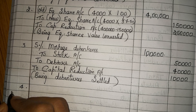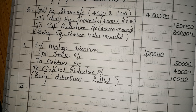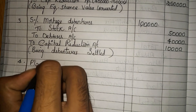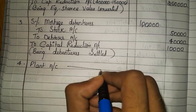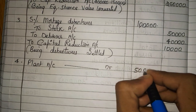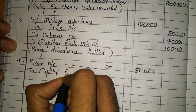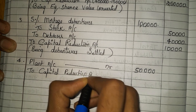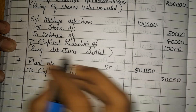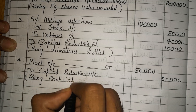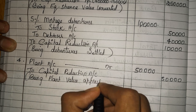Next, the plant is to be appreciated. The plant account is debited — how much is it appreciated? Rs.50,000. So plant account debit Rs.50,000, credited to capital reduction account. Narration: being plant value appreciated.